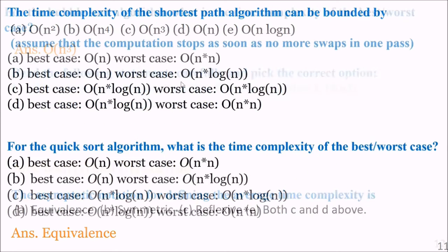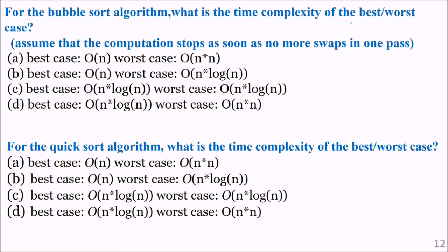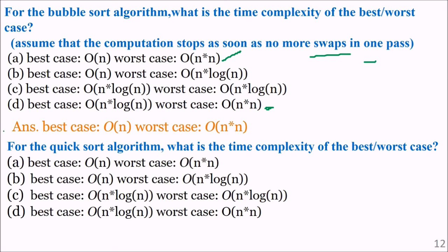For the bubble sort algorithm, what is the complexity of the best and worst case, assuming computation stops as soon as no more swaps occur in one pass? In the worst case it is always order of n squared. In the best case, if we just stop when there are no more swaps, we get order of n.